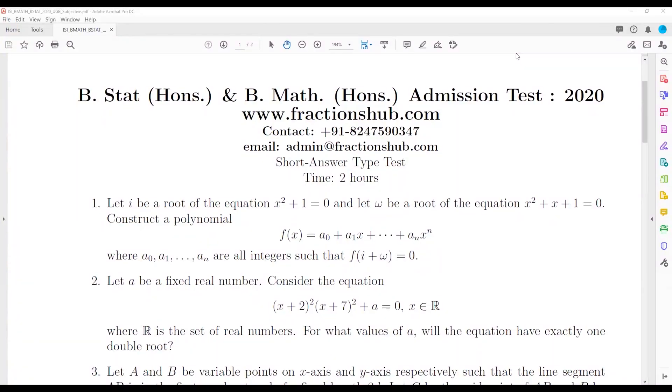Hello everyone, in this video we are going to discuss the subjective questions that came in B.Stat B.Math 2020. So let's start with the first question. It says that if i is the root of the equation x squared plus one equals to zero and omega be a root of the equation x squared plus x plus